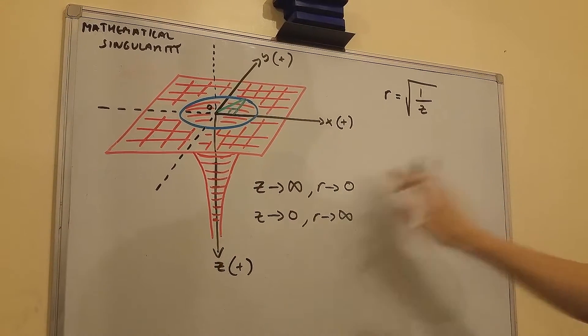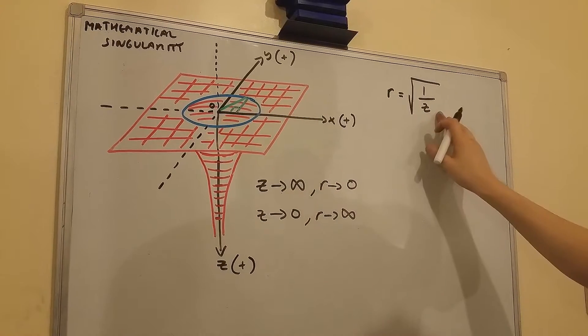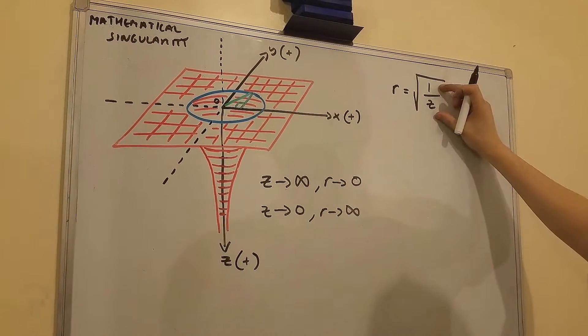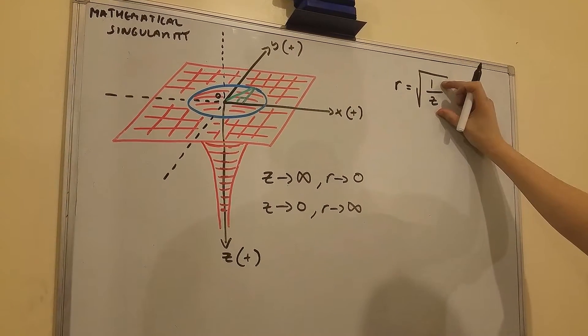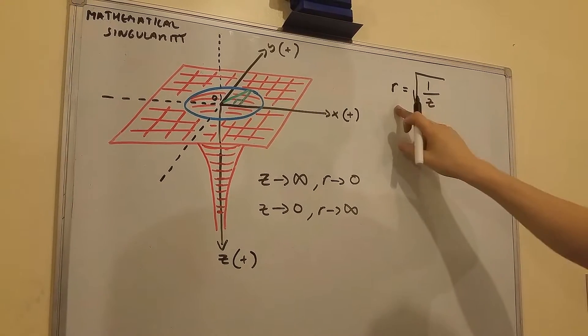So as you can see, as z approaches infinity, this fraction gets extremely small, so r itself approaches zero.